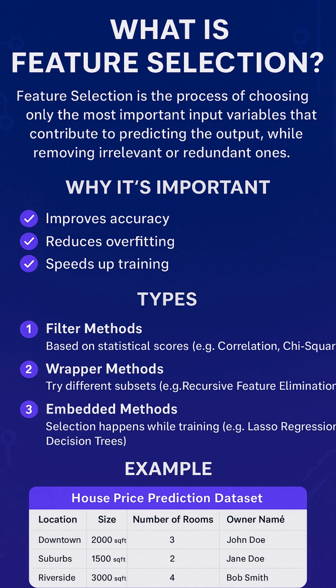The types are as follows: filter methods, based on statistical scores — for example, correlation and chi-square. Wrapper methods try different subsets — for example, recursive feature elimination.